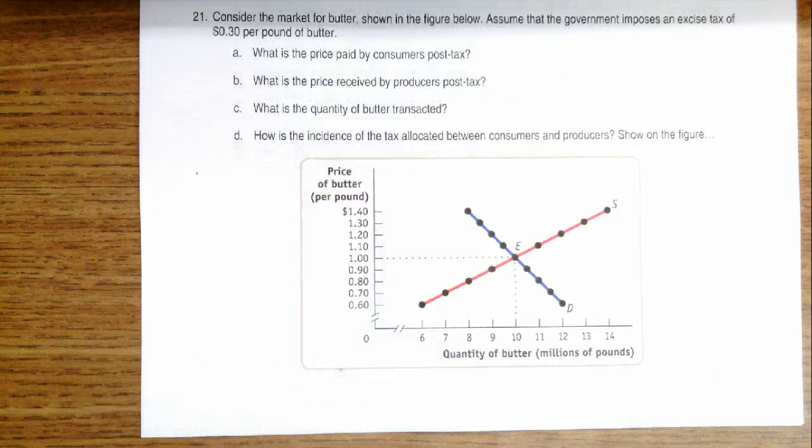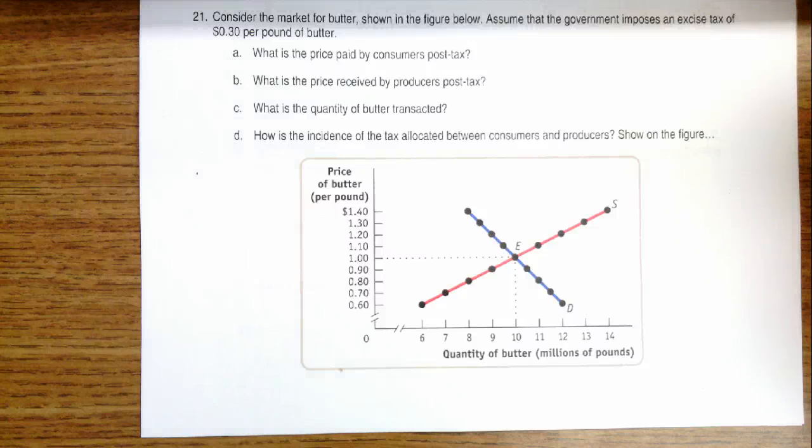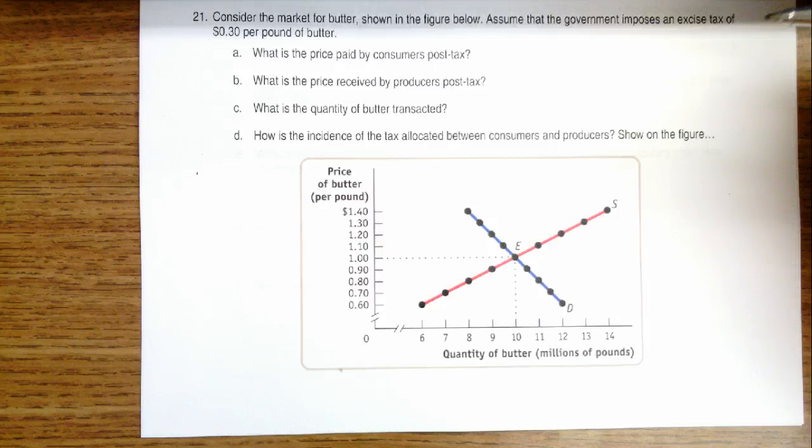This question is looking at the market when there's a $0.30 per pound excise tax placed on the market for butter. The first portion says, what is the price paid by consumers after the tax? Well, let's find where the tax wedge is.